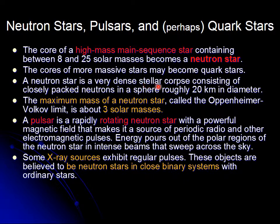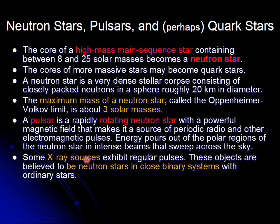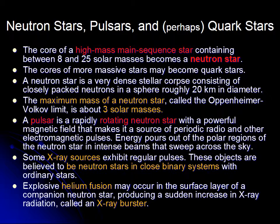The neutron star is extremely dense and not very large — about 20 kilometers in diameter. The maximum mass of a neutron star is 3 solar masses. Neutron stars can produce radiation because of their rotation and strong magnetic field; a rotating neutron star can be a pulsar, with radiation visible in x-rays and radio waves. Objects that produce x-rays are neutron stars in close binary systems. Helium fusion on the surface of a neutron star produces an x-ray burster.